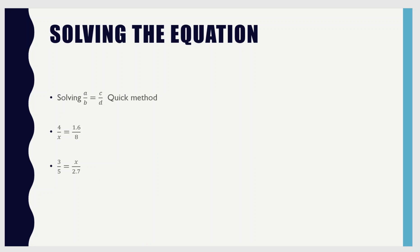We're going to need to solve equations in order to work with these, so I want to give you a quick method. It's not always the very quickest method, but this method is always going to work, and it has three steps. The first step is to cross multiply — I'll show you what that means in a minute. The second step is to divide by the coefficient.